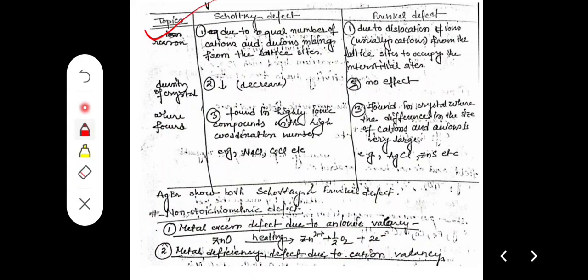The difference between Schottky defect and Frenkel defect: in Schottky defect, equal numbers of cations and anions are missing from the lattice site, so the density decreases. In Frenkel defect, ions — usually cations — are dislocated from lattice sites to occupy interstitial sites. There is no actual missing of ions; they are still within the lattice but dislocated, so the overall cation and anion count remains the same and density remains constant.